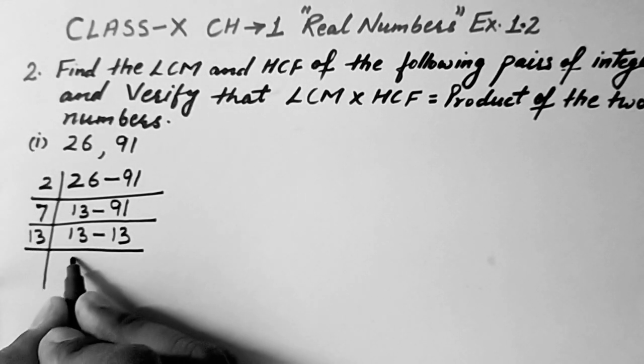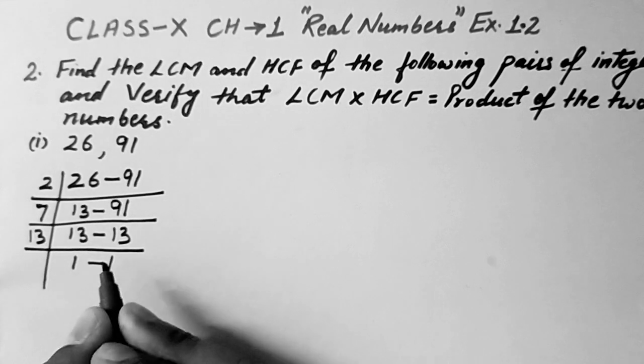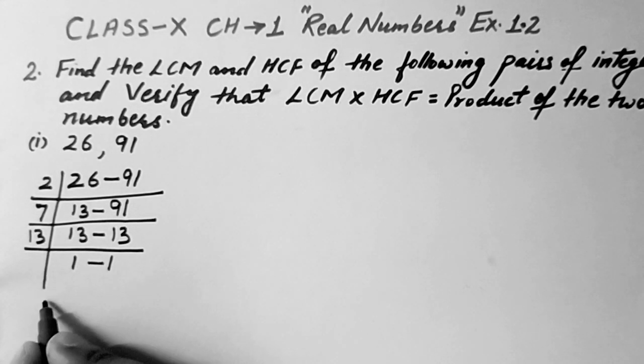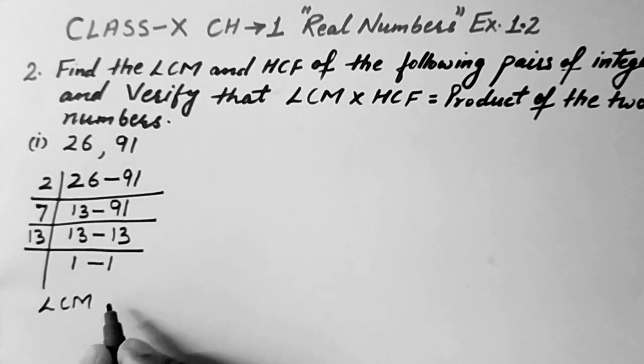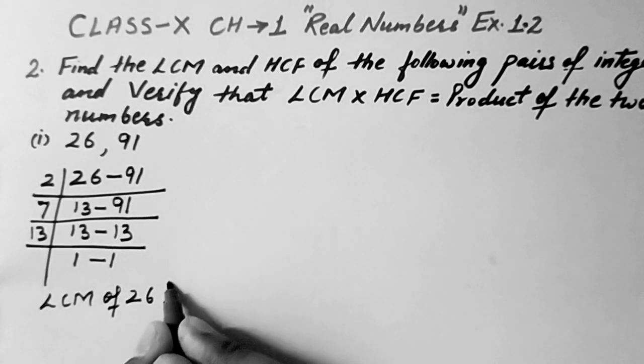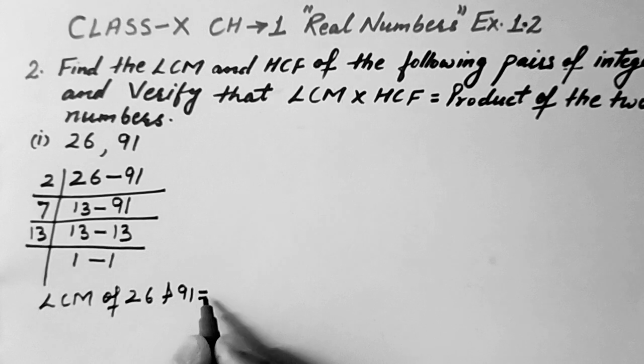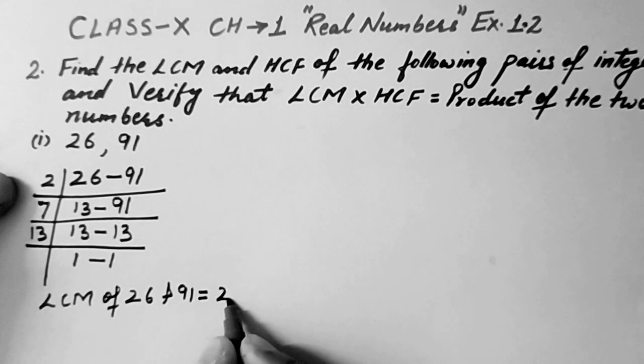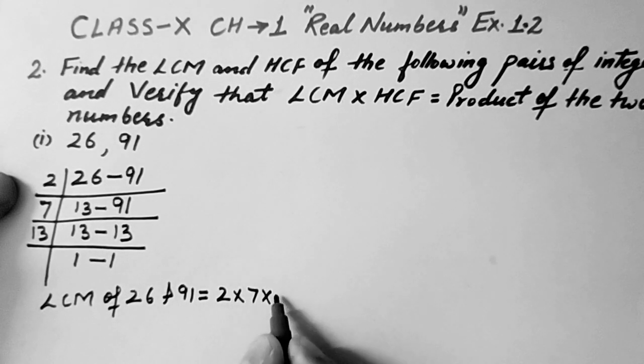So these are going with 13 only. So 13 ones are 13, 13 ones are. So you can write LCM of 26 and 91 is equal to 2 into 7 into 13.